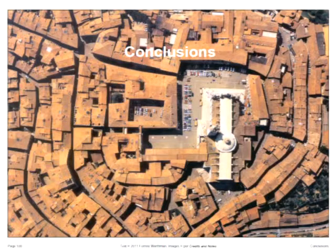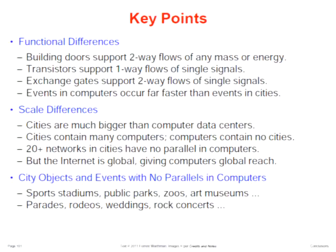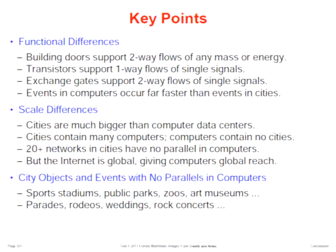To conclude, we talked about functional differences of building doors and transistors, and exchange gates. Events in computers occur far faster than events in cities, which are much, much slower — there are big scale differences. Cities are much bigger than computer data centers; cities contain many computers, but computers do not contain cities. There are more than 20 networks in cities that have no parallel in computers. But the internet has gone global far faster than any city network, particularly road networks, so it will be interesting to see what happens in the future.